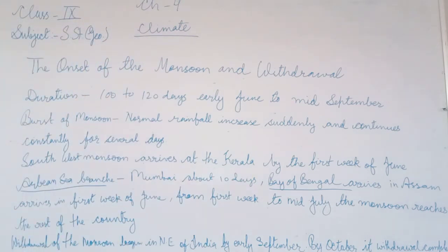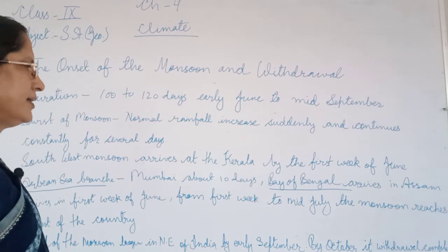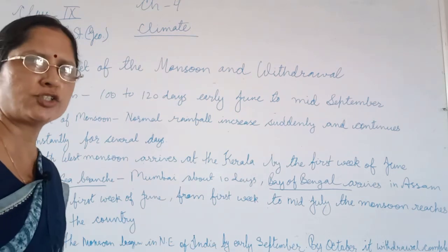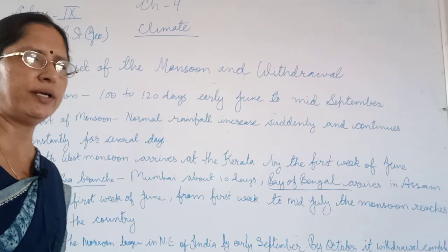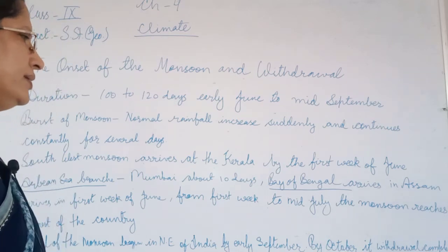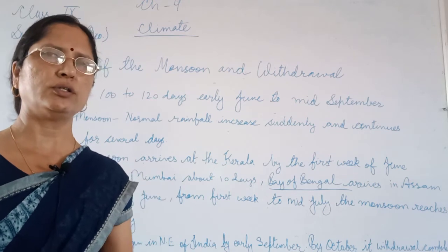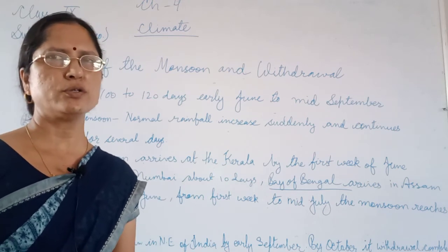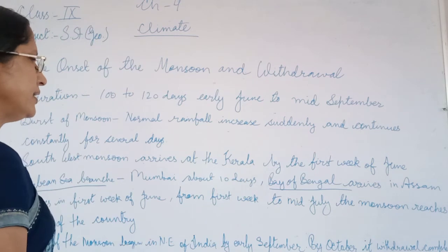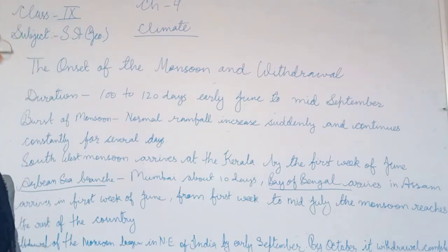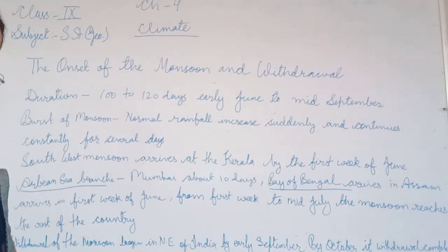The islands receive the very first monsoon shower progressively from south to north. The Andaman & Nicobar and Lakshadweep islands are hit by monsoonal winds from April, moving south to north. The withdrawal from islands takes place progressively from north to south, from the first week of December to the first week of January.